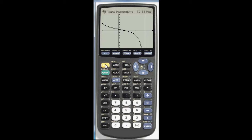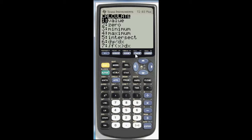But to use the zero capabilities of your calculator, go to second. Right above trace is calc. The second option here is zero. So, choose that option.